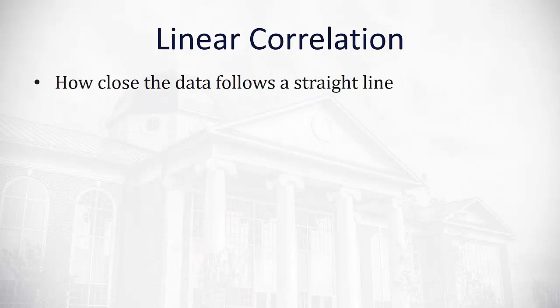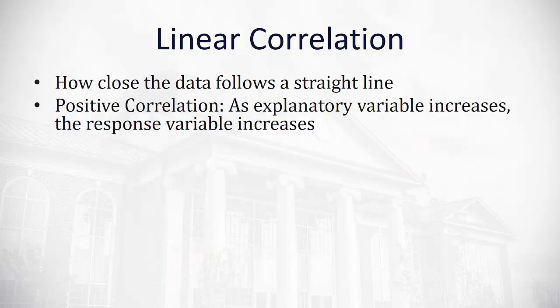That attempt to draw a straight line through the data is what we call linear correlation. Linear correlation measures how close the data follows a straight line. If we have a positive correlation, what we're saying there is as the explanatory variable increases, the response variable will decrease. Basically, as one goes up, the other goes up.